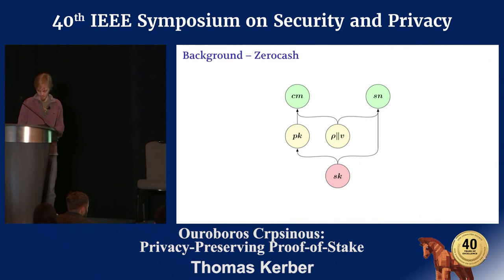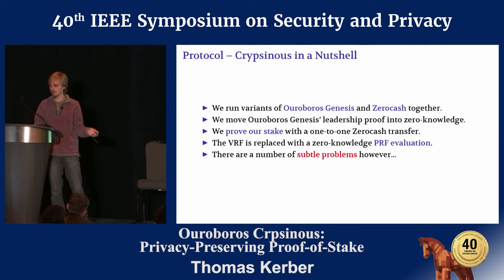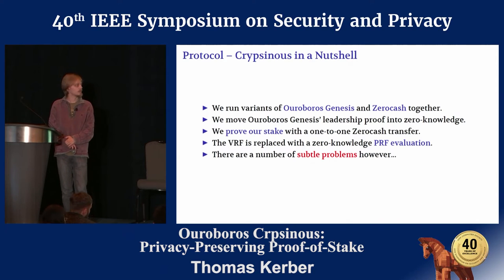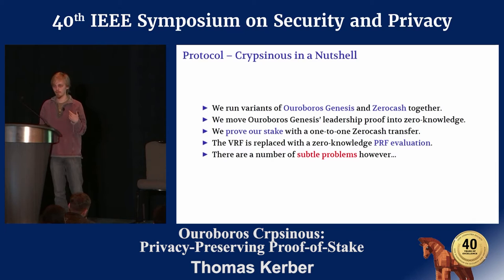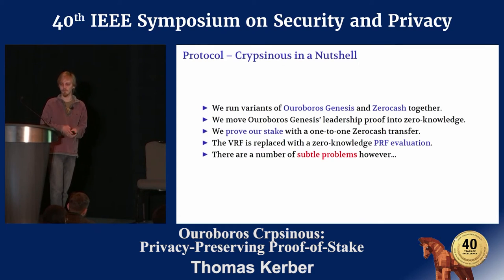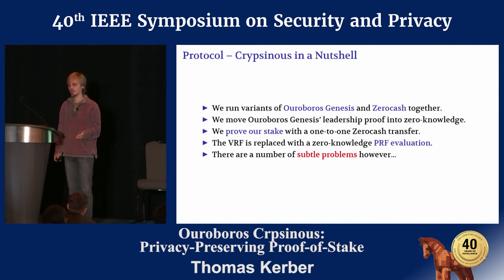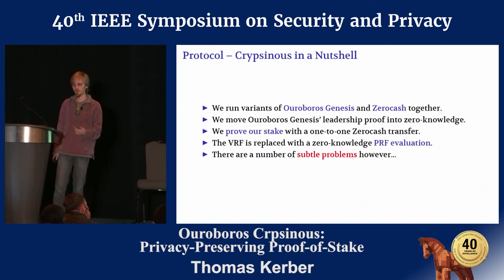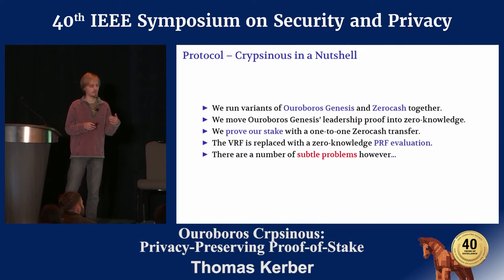What Crisinos does in a nutshell is run Ouroboros Genesis and Zerocash together in tandem, and we move the proof of leadership into a zero-knowledge proof. The main challenge is convincing people that we have some stake in the system without revealing what our stake is. We do this by doing a one-to-one Zerocash transfer — we transfer one coin into a new coin, and this transfer reveals a value inside the zero-knowledge proof which can then be used for additional conditions. We essentially embed the Genesis leadership conditions in this. A subtle point is that the verifiable random function can now be replaced with a pseudo-random function, since we get verifiability from the zero-knowledge proof itself.